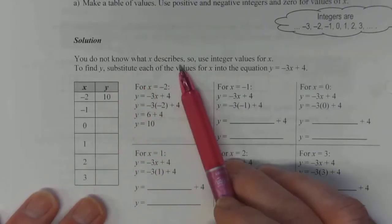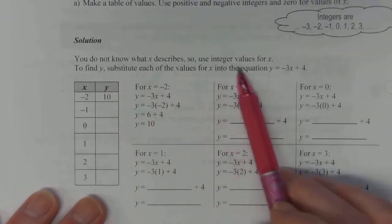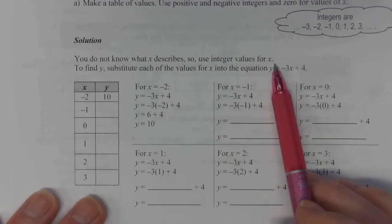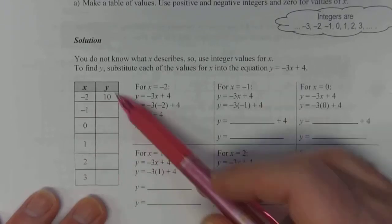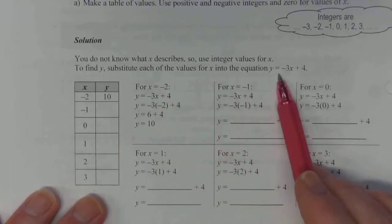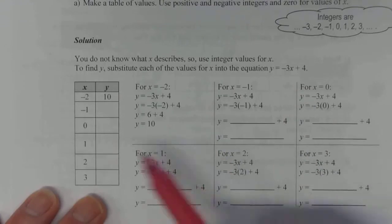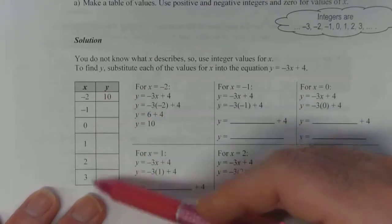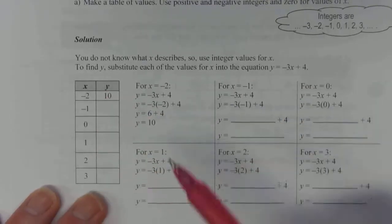and any positive number without decimals. So you do not know what x describes. So we use integer values for x to try and figure out some data for the table.